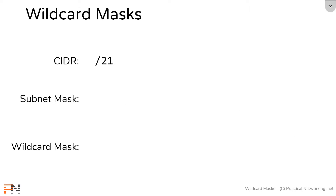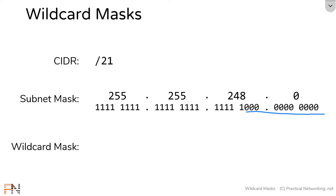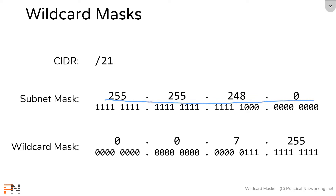Here is the CIDR notation of slash 21, which means the subnet mask has 21 ones in binary. If we convert each of those octets into decimal, we would get that slash 21 correlates to the subnet mask of 255.255.248.0. The wildcard mask would simply have all these ones flipped to zeros and all these zeros flipped to ones, giving us a wildcard mask that, converted back to decimal, is 0.0.7.255. So slash 21 correlates to subnet mask 255.255.248.0, which correlates to wildcard mask 0.0.7.255.